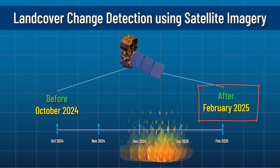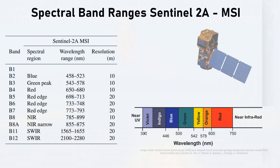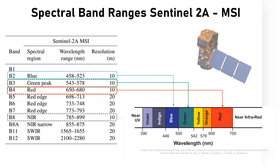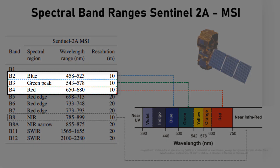Getting into the technical aspects a bit — when we talk about satellite data, we're referring to different independent spectral bands that correspond to different wavelengths of light reflected off of Earth's surface, and this is essentially what a satellite sensor captures. Here you can see the list of bands captured by the MSI sensor of the Sentinel-2 satellite. To create a natural color or true color image of the Earth's surface, I need to use the red, green, and blue bands captured by the sensor and blend them together.